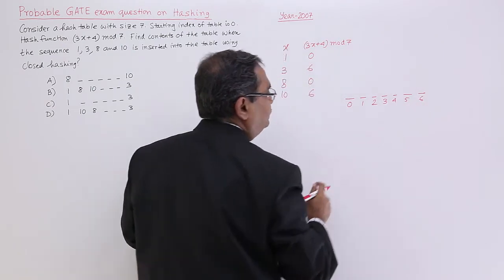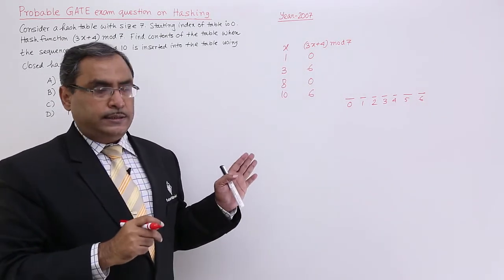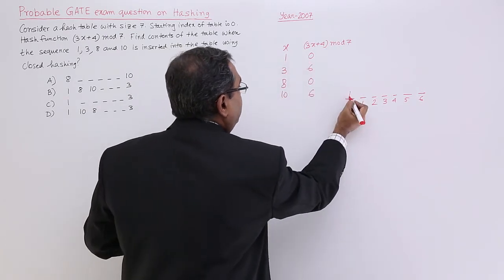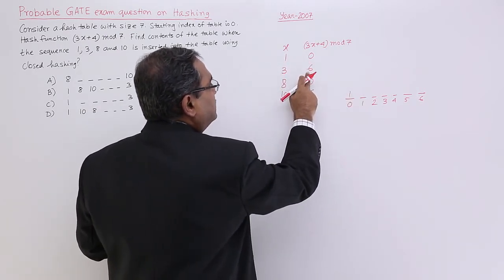I think it is 7 locations, 0 to 6. Now let me place them. 1 will be going to the 0th address, 3 will be going to the 6th address.